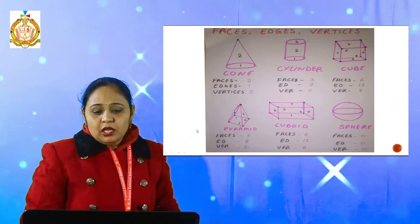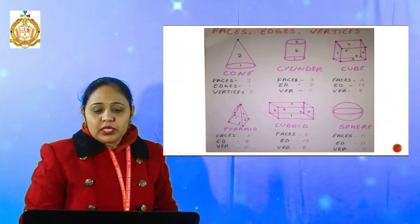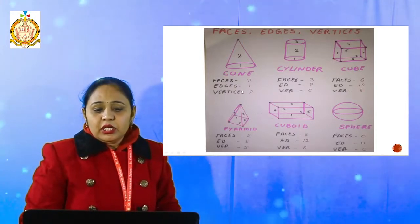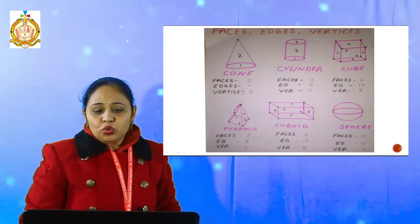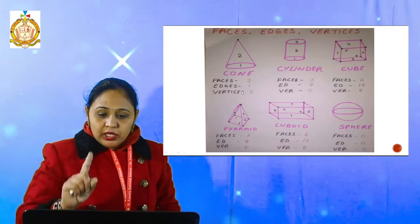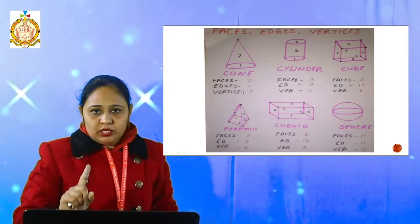And for the cone — if I take a line to draw it, this will become an edge of it. Then for vertices — it has one vertex only.